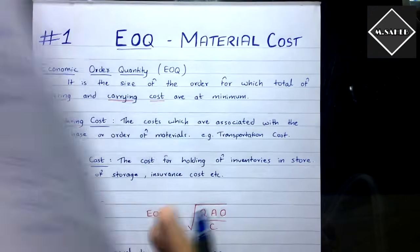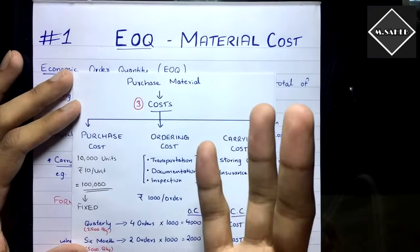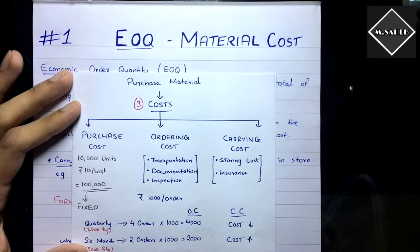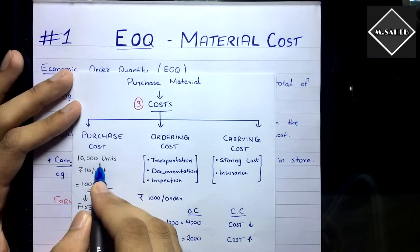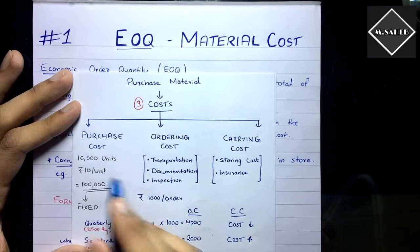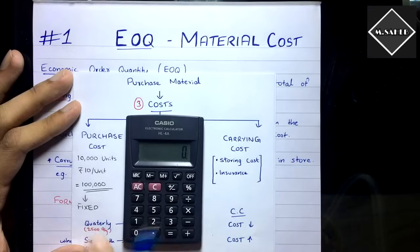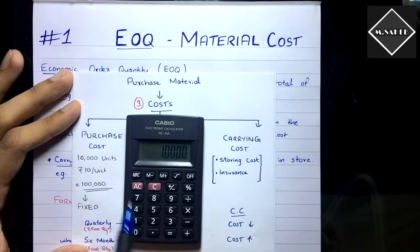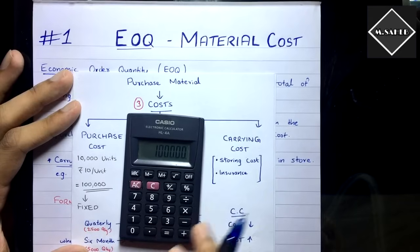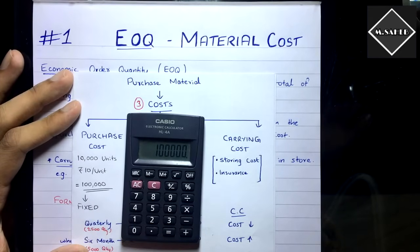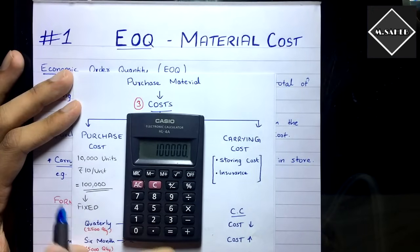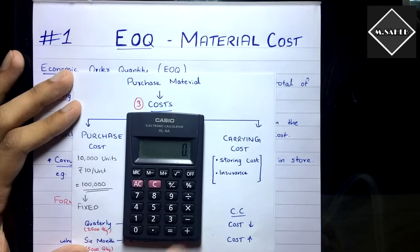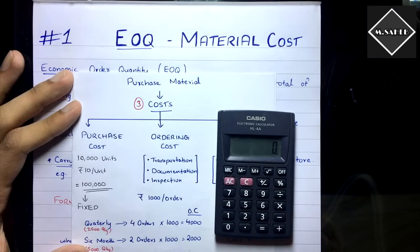When you want to purchase raw materials there are mainly three costs involved: purchase cost, ordering cost, and carrying cost. Purchase cost — let's say in your factory for a year you need 10,000 units. That's called annual consumption, annual demand, or annual requirement. You want to purchase 10,000 units of raw material, and let's say the cost per unit is ₹10, so your purchase cost would be ₹1 lakh. This cost is fixed.